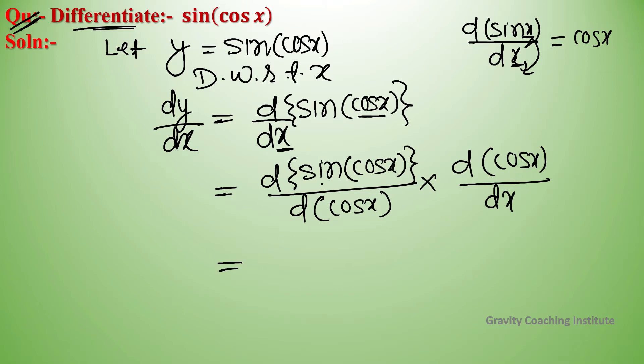Now we can write cos(cos x) times the derivative of cos x, which is minus sin x. So this equals minus sin x times cos(cos x).